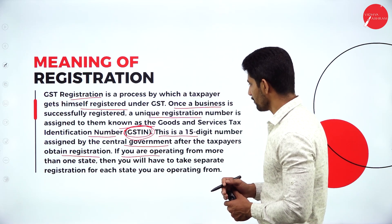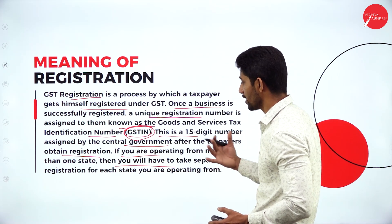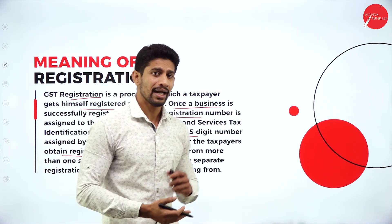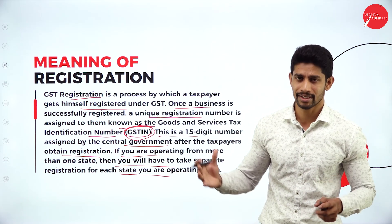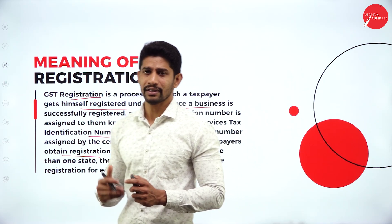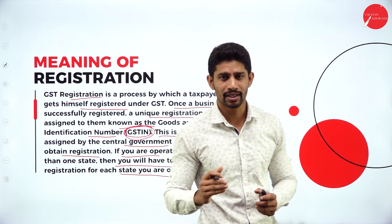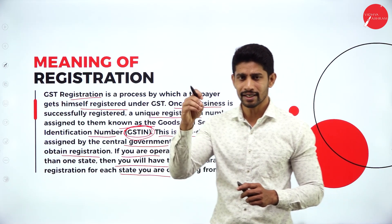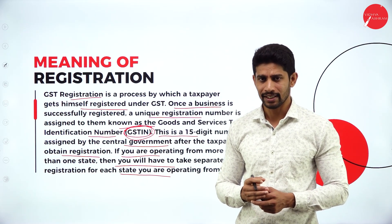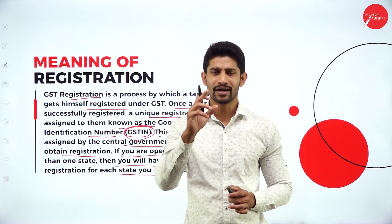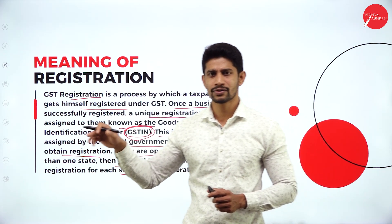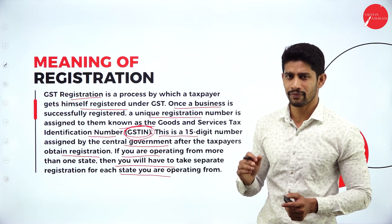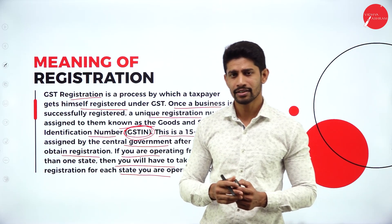If you are operating from more than one state, you will have to take separate registration for each state you are operating from. For example, if your business is in Karnataka, Andhra Pradesh, and Tamil Nadu, you must register separately in each state. One registration for all states is not possible. If you are running your business only in Karnataka, then one registration is enough.